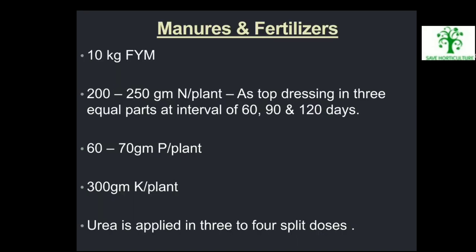Manures and Fertilizers: 10 kg FYM is applied. 200 to 250 grams nitrogen per plant as top dressing in three equal parts at an interval of 60, 90 and 120 days. 60 to 70 grams phosphorus per plant is applied. 300 grams potassium per plant is applied. Urea is applied in three to four split doses.